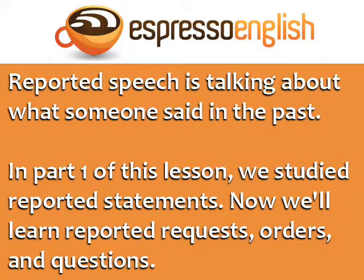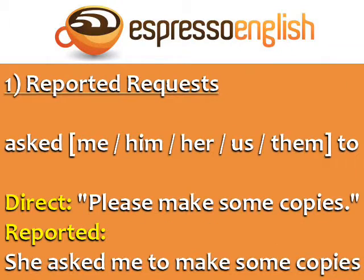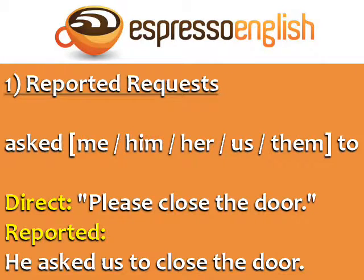Now we'll learn reported requests, orders, and questions. For reported requests, use the structure: asked me, him, her, us, or them to. For example — Direct: 'Please make some copies.' Reported: 'She asked me to make some copies.' Direct: 'Please close the door.' Reported: 'He asked us to close the door.'